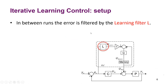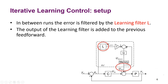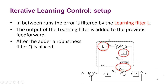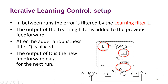In between runs, the errors are filtered by a so-called learning filter L, which we will discuss how to design shortly. The output of that learning filter feeds into a low-pass filter — the robustness filter, or Q filter. The output of that Q filter becomes the new feedforward for the next run.